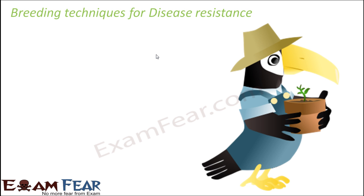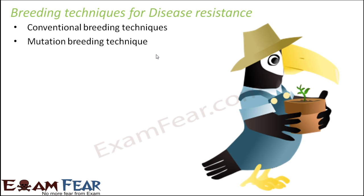What are the breeding techniques for disease resistance? There are two types: one is the conventional breeding technique and the other is mutation breeding. In the conventional technique, we collect all varieties — creating a germplasm collection — select varieties with desirable traits, cross them, and then select again, following the general steps of plant breeding. In mutation breeding, what we do is a little more interesting and different.